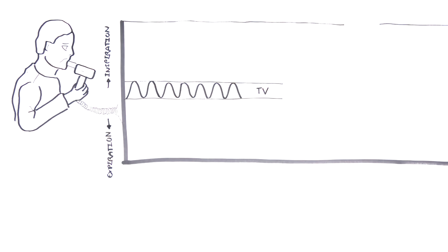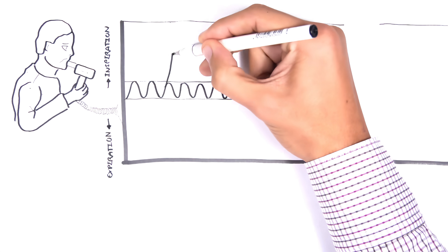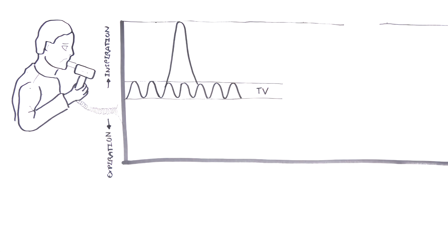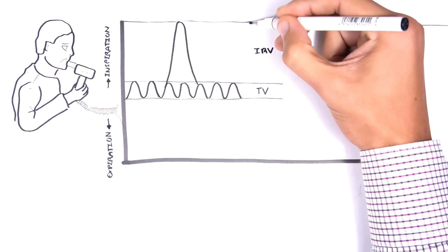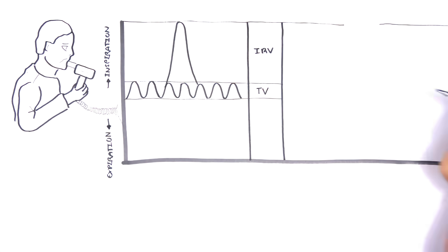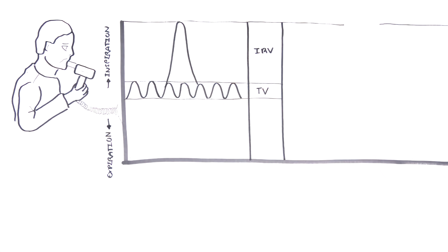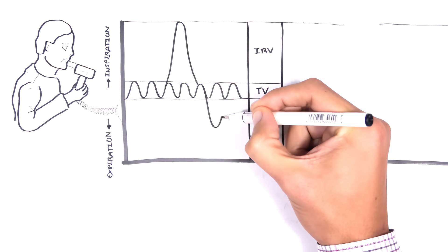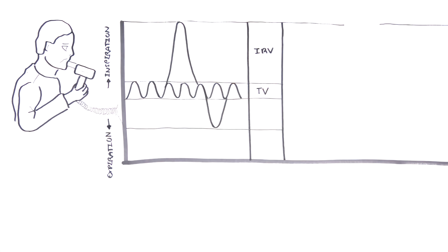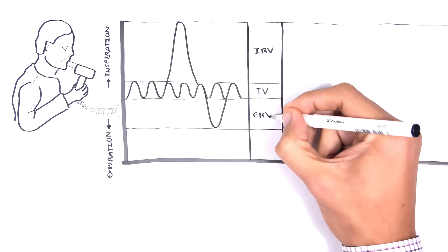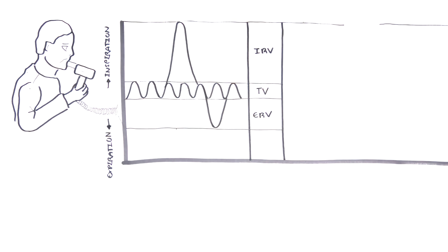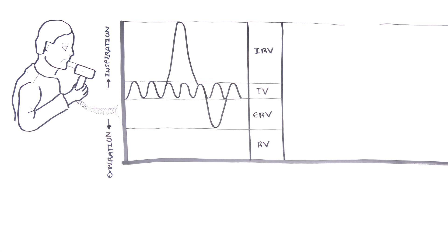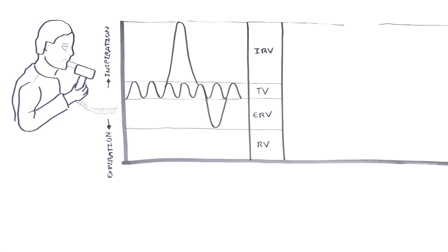Now imagine taking a maximal deep breath in — this is the inspiratory reserve volume, also known as IRV. Then imagine taking normal breaths and then having a maximal expiration — this is your expiratory reserve volume or ERV. The air remaining in your lungs after maximal expiration is the residual volume or RV; you always have that there.